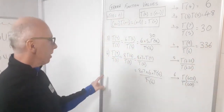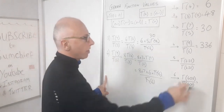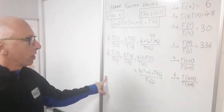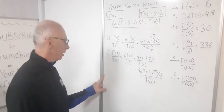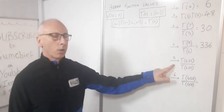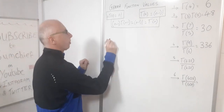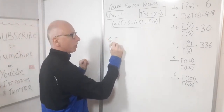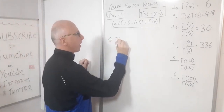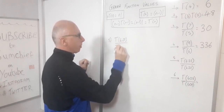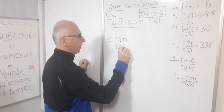Question 5 involves fractions, which looks a bit trickier. I don't know much about 6.25 or 5.25 factorial, so I'm going to need to use the gamma properties. I have gamma(4.25) in the denominator and gamma(6.25) in the numerator — they are exactly two apart.